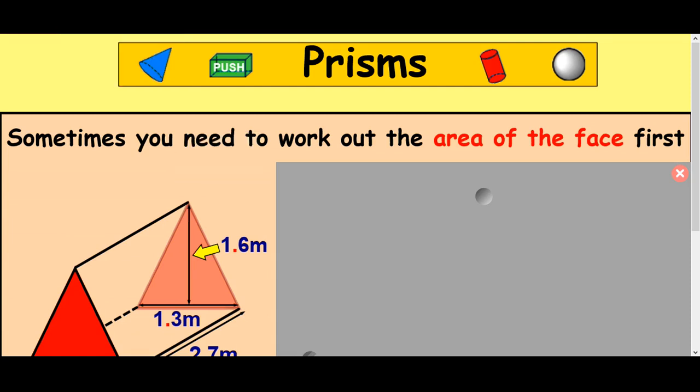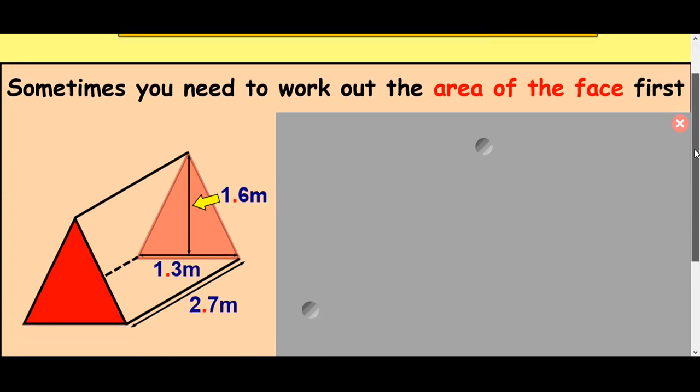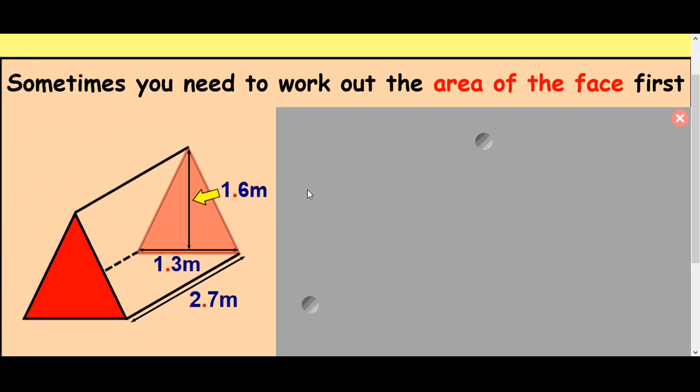In this lesson we're going to work out the volume of a triangular prism. Now the difference with this compared to the lesson before is we're not going to be told the area of the face part of the prism. We're going to have to work that out ourself.